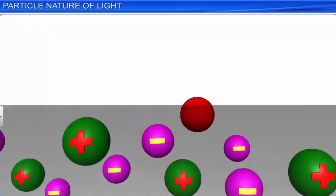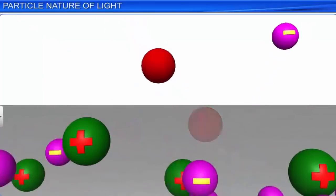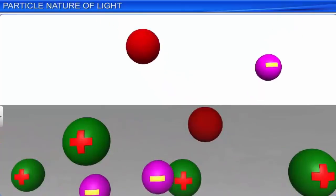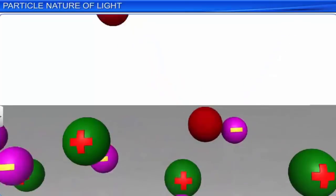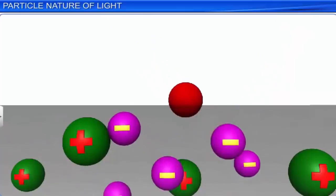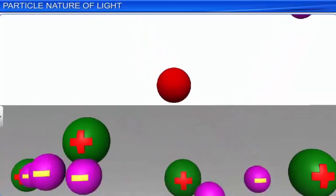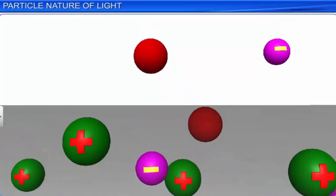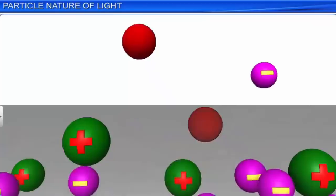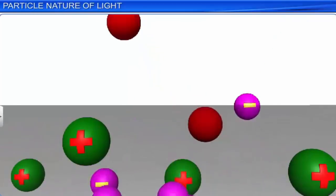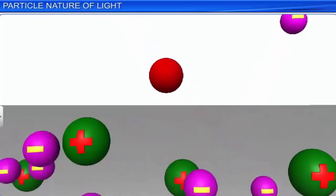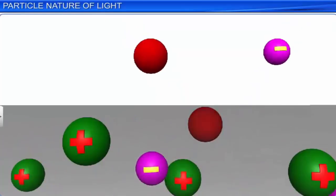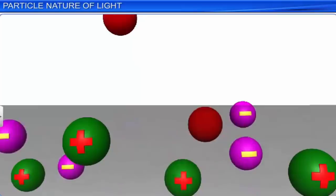In a photon-particle collision, such as a photon-electron collision, the total energy and total momentum of the system are conserved. However, the number of photons may not be conserved in such a collision, because the incident photons may be absorbed or new photons may be created. In the case of the photoelectric effect, the photon is completely absorbed in the process of photon-electron collision. When x-rays are scattered from electrons, after the photon-electron collision, a new photon is created.